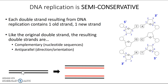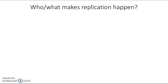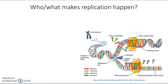Zooming out again, if this is the five prime end of this strand, the other end has to be the three prime end. The strand paired up with it is anti-parallel. When we pull those apart, they maintain their directionality, and the new strands that are built to match them are also anti-parallel to the originals. So who or what is making all of this happen inside the cell?